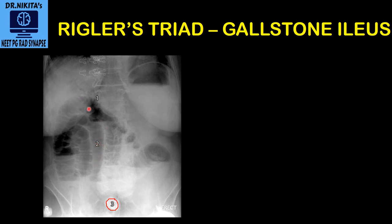Because of this excessive dilatation, air is pushed from the bowel into the biliary tree through the fistula that is formed. You see these black lines here in the liver — these black lines indicate pneumobilia. The third feature of the triad is pneumobilia.